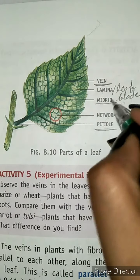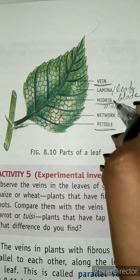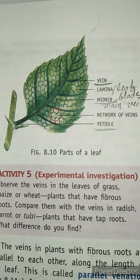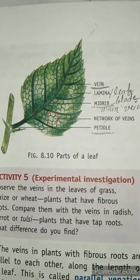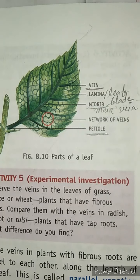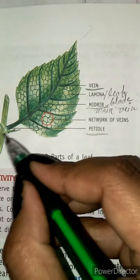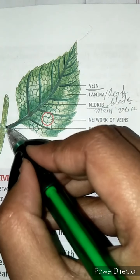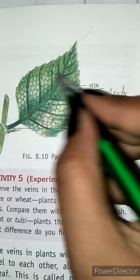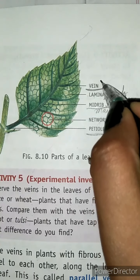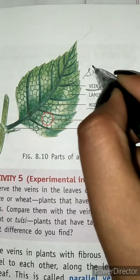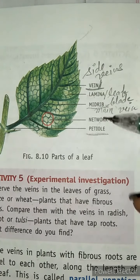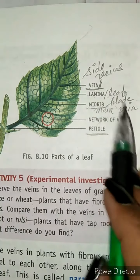Another name for midrib is main vein. This midrib is directly attached to the petiole. The midrib further divides into smaller veins, and these are known as side veins.